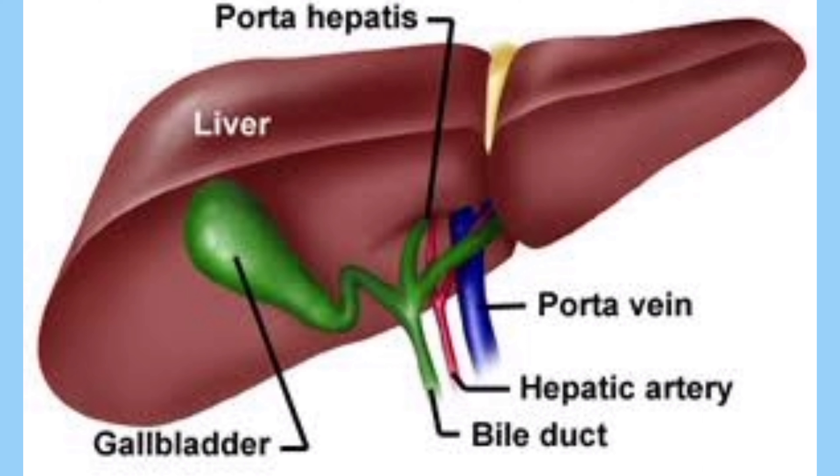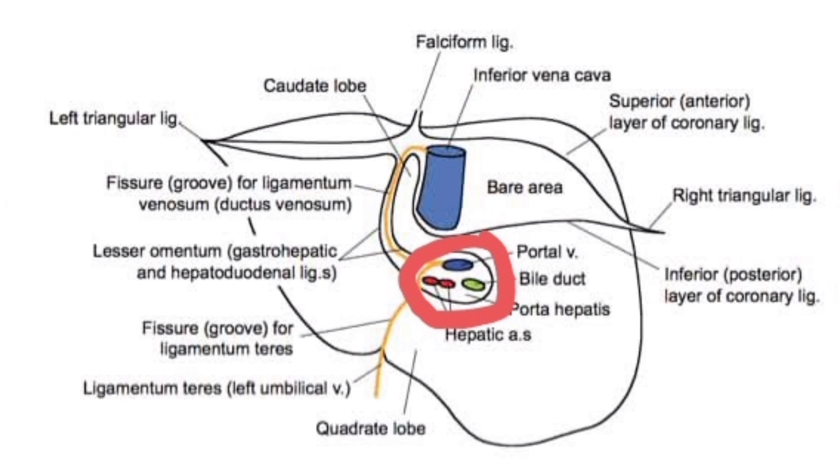These are the structures of the Porta Hepatis — a very important short note. When writing a short note, you must cover: number one, what is Porta Hepatis; number two, its situation on the inferior surface of the liver; number three, its approximate length of 2 to 3 centimeters; and number four, the structures passing through — both entering and exiting the liver. Finally, draw a diagram and label the structures. That will be a complete answer for your short note on Porta Hepatis.